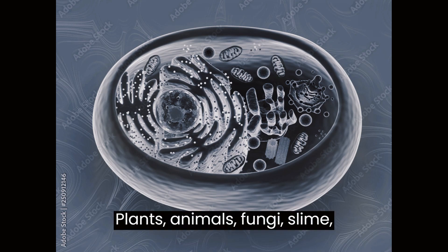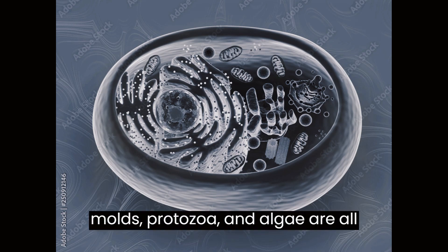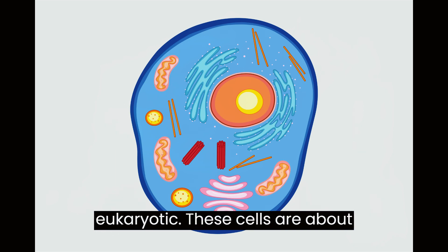Plants, animals, fungi, slime molds, protozoa, and algae are all eukaryotic.